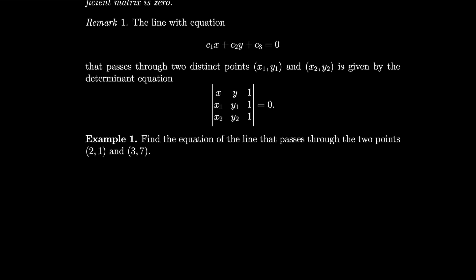So all we have to do is write out the top row, xy1 for general x and y, and then we'll plug in 2, 1 for the first point. We'll keep the 1 in the last column, and then our second point is 3, 7, and then we'll keep the 1. We take that determinant and set it equal to 0. So by taking this determinant, we can get negative 6x plus y plus 11. So that must be 0, and that's the equation of our line.